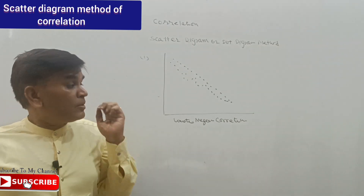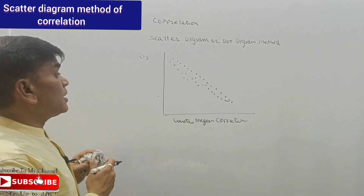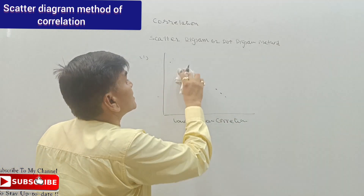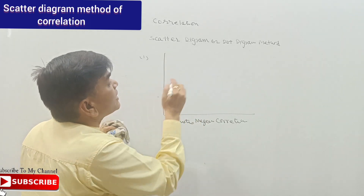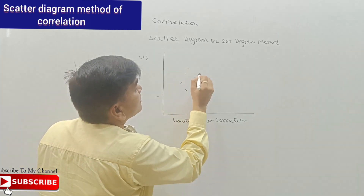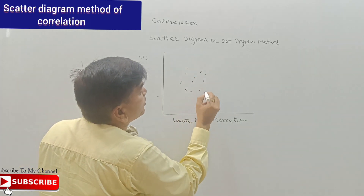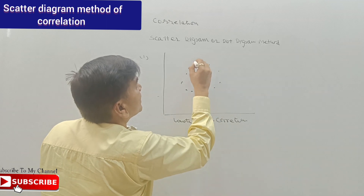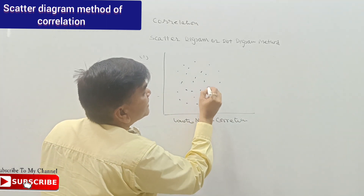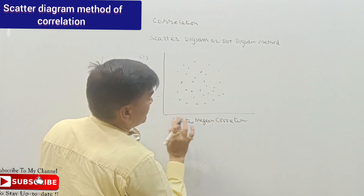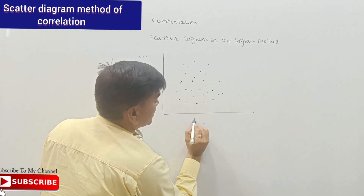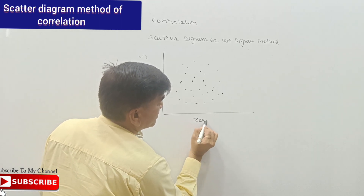Or if we plot x and y series and we cannot get any pattern — the points of x and y, the dots, are scattered randomly like this — we will say it is absence of correlation, or zero correlation.